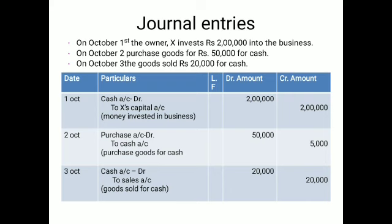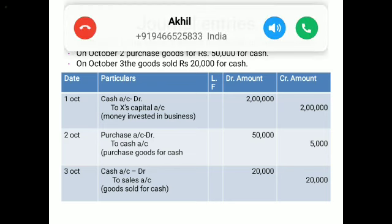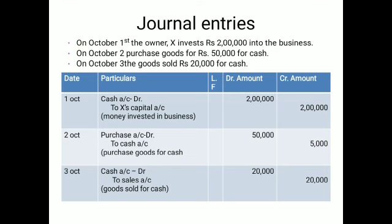Moving to the transactions for journal entries. Number one: X invests two lakhs into the business as an owner. The business is receiving the money, and cash is an asset — it will be debited. X is the owner, and the owner's investment is called capital, so capital will be credited. The entry is: Cash Account debit, to Capital Account.